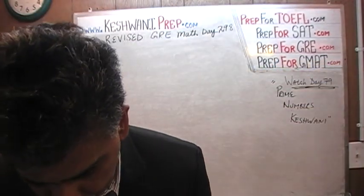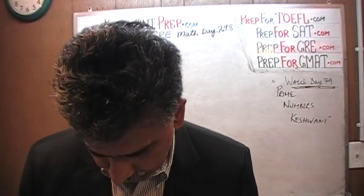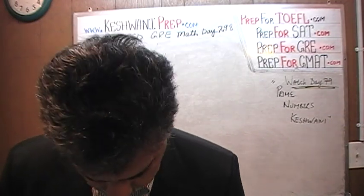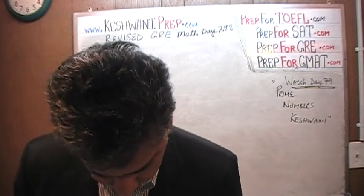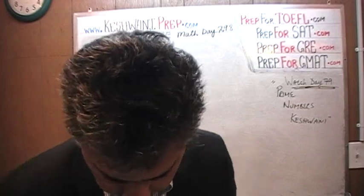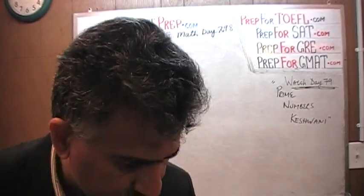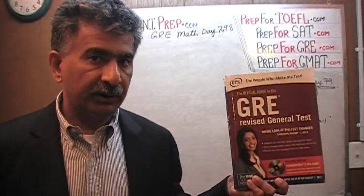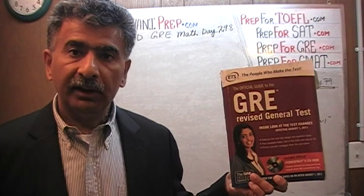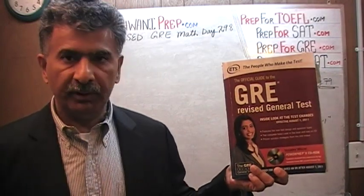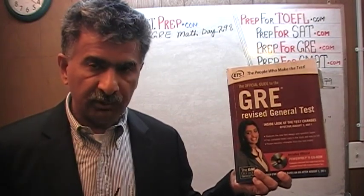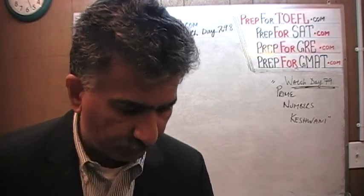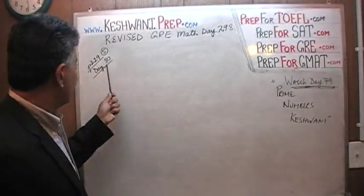The problem that we are about to solve is the one that you will find on page number 219. This is the exact same problem that appeared on the same exact page number in the first edition of the revised GRE book. We have already solved all the problems in this book — I'm just redoing them. If you want to watch the original solution, you will find it on day number 80.